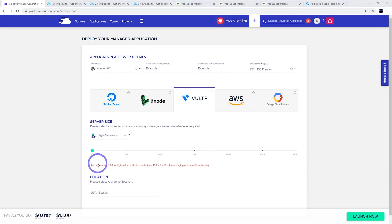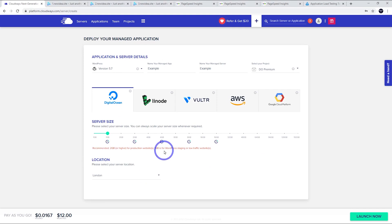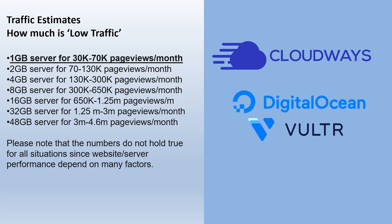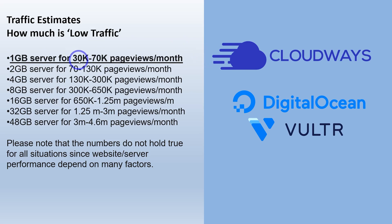You might have noticed that if you choose a server smaller than two gigabytes — for example, this one gigabyte on Vulture or these one gigabyte ones on DigitalOcean — you'll get a message saying one gigabyte is for WordPress staging or low traffic websites, but it doesn't really give any guidance on what low traffic means. So I reached out to Cloudways, and they were quite helpful. They supplied guidelines: a one gigabyte server, low traffic, means 30,000 to 70,000 page views a month. For some people this might actually be a lot of traffic — a lot of small blogs might only be five or ten thousand page views a month, and so many projects will still be fine on these one gigabyte servers.